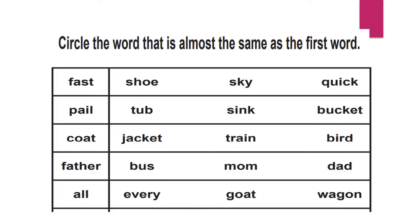Hello kids, welcome back once again. Today we will see synonyms. Now children, what are synonyms? Synonyms are like antonyms in that antonyms are opposites — the same way, synonyms, as the name indicates, are meanings. That means we need to circle the word that is almost the same as the first word.